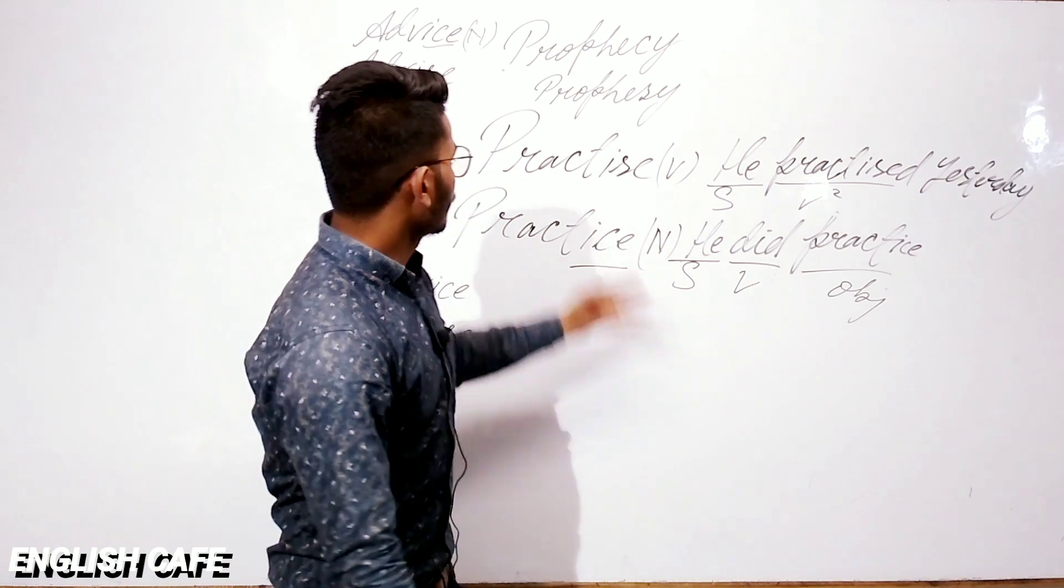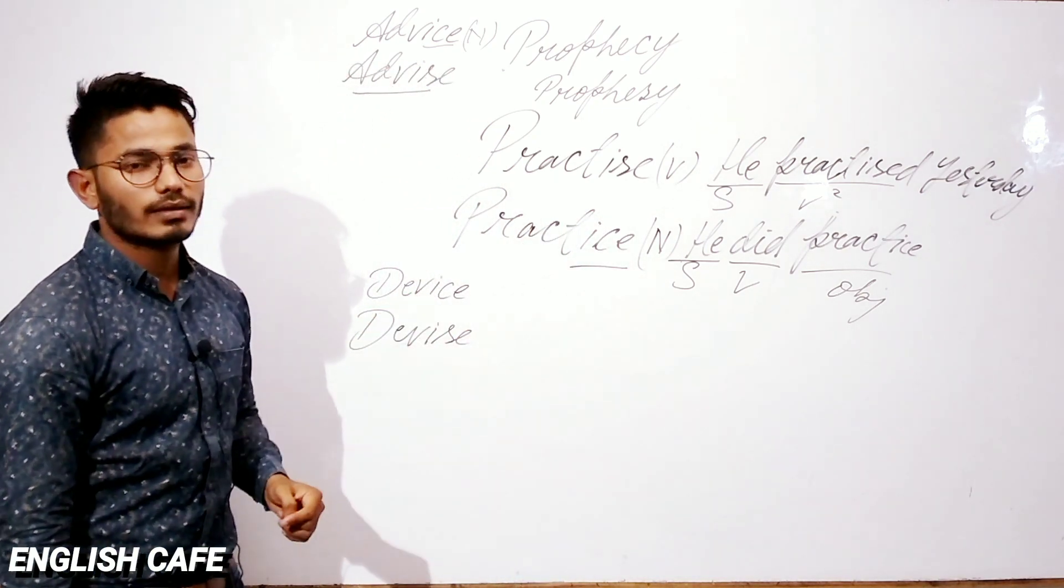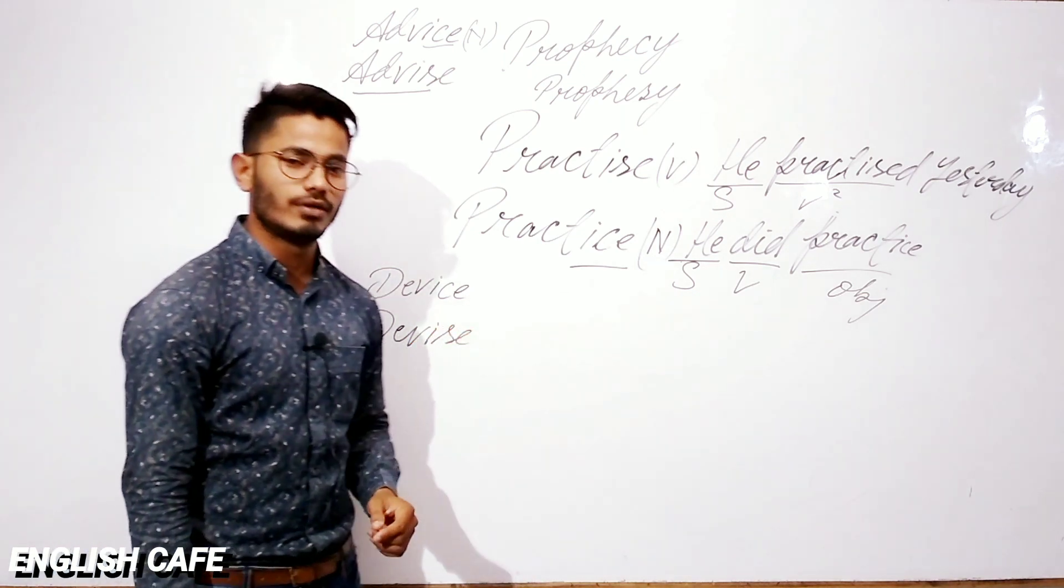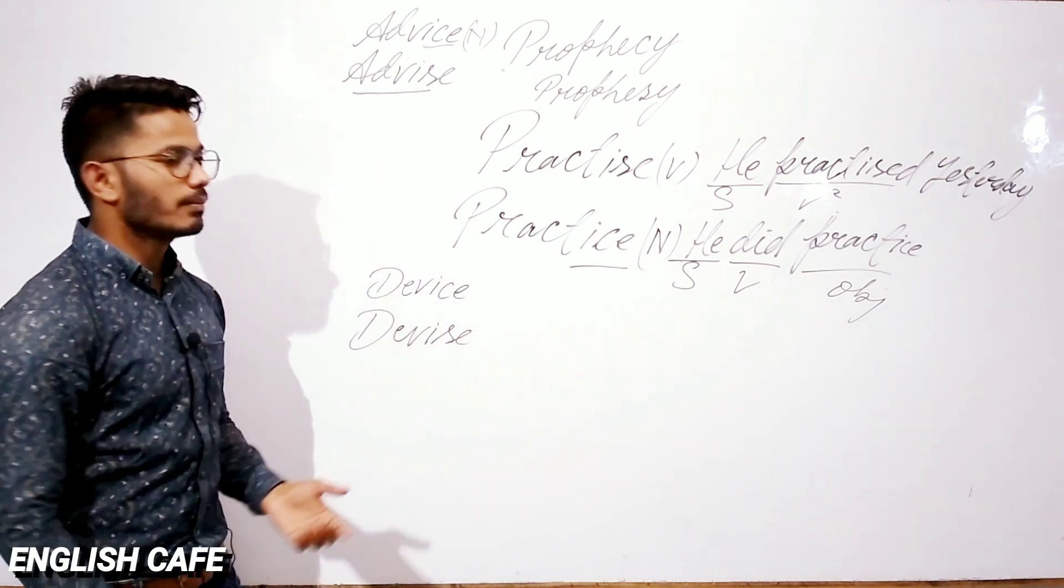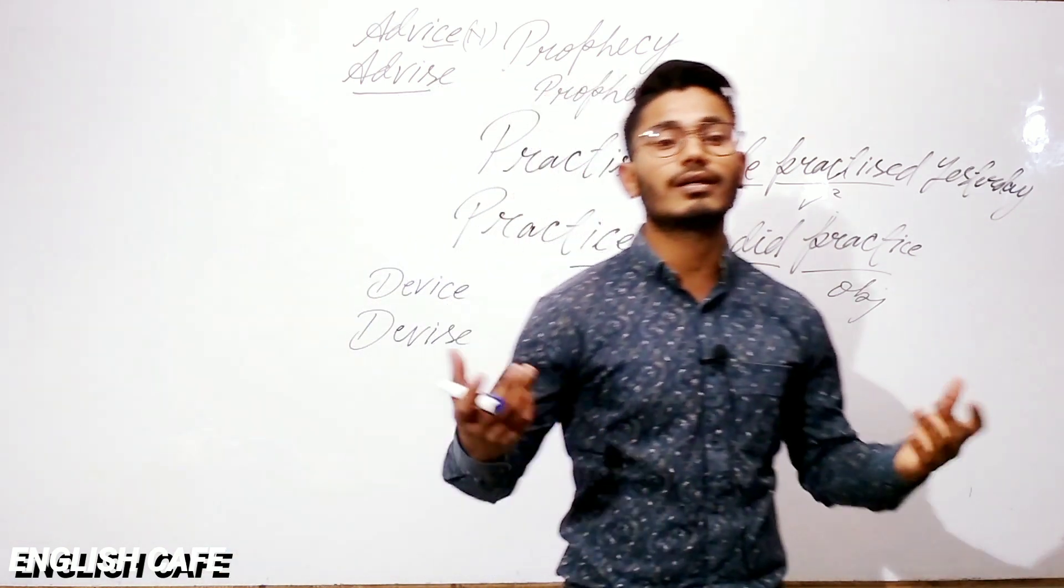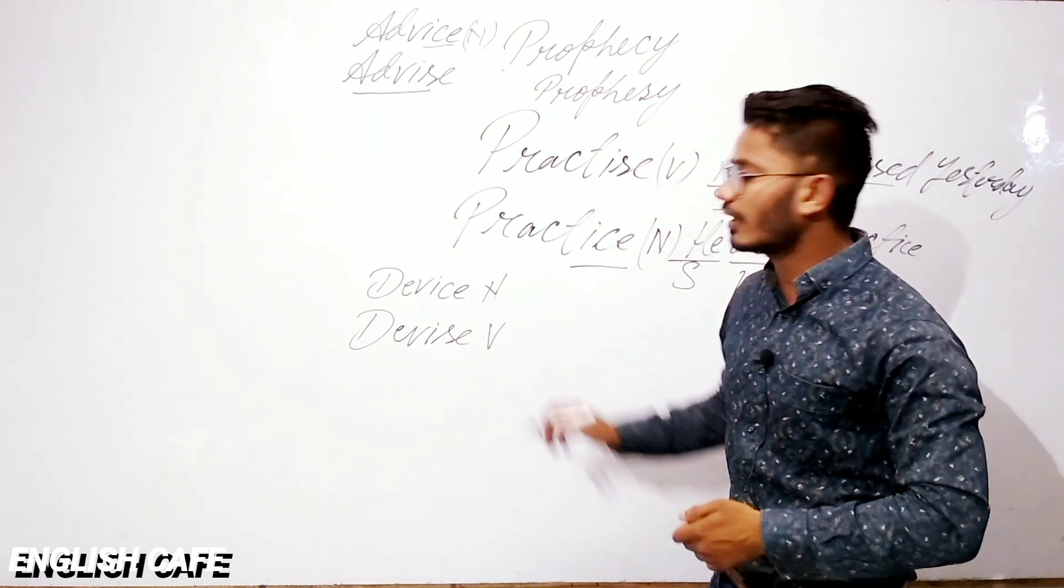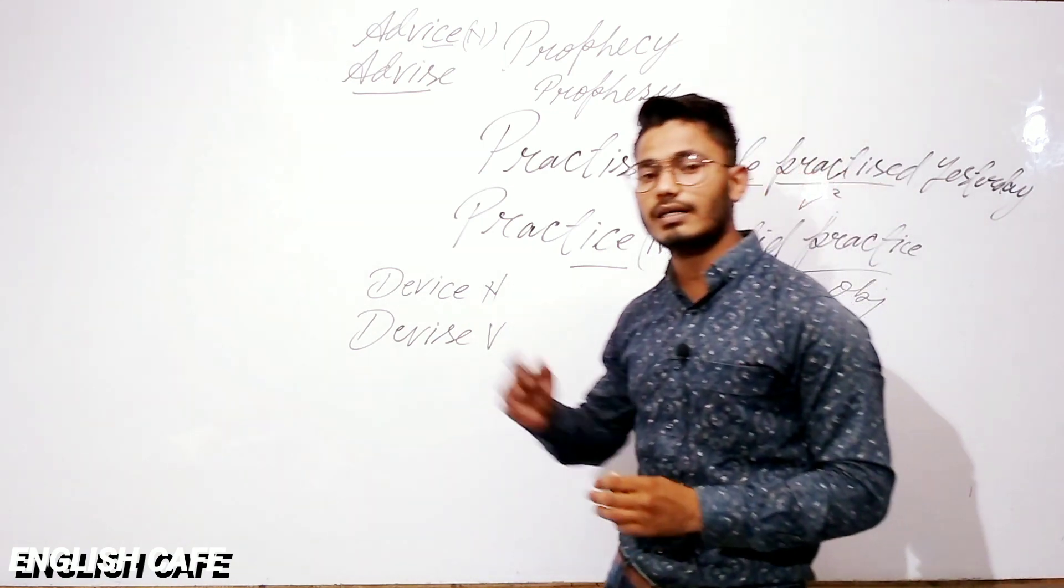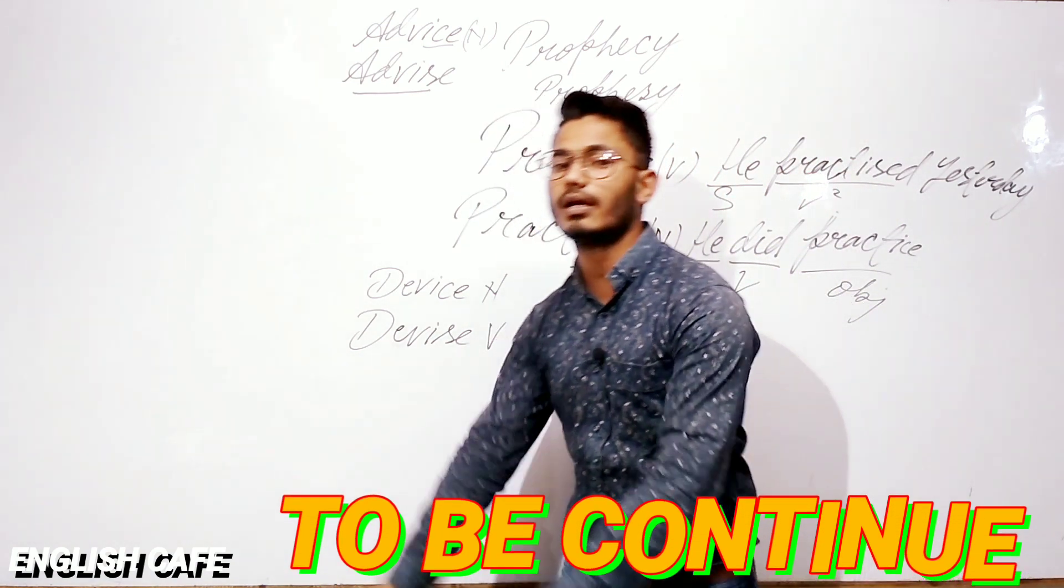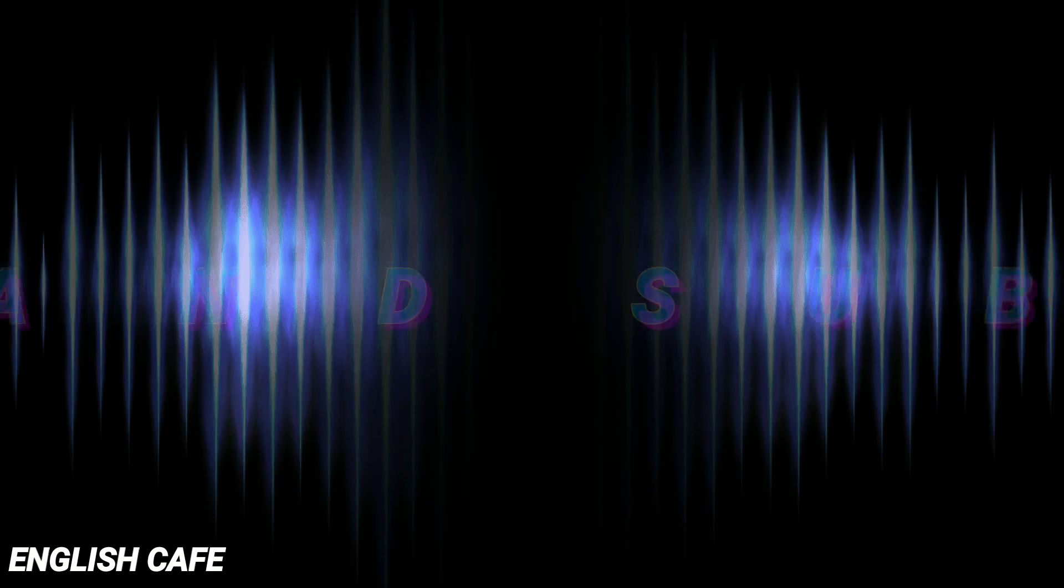In the same way, device. So in this maybe C is a noun and S is a verb. So device, you all know, like mobile, tabs, computers, all these are electronic devices. So this is noun. Or in this case, its meaning becomes about new ideas. So thinking about new ideas.